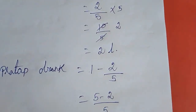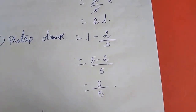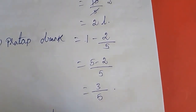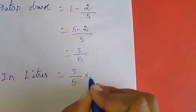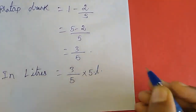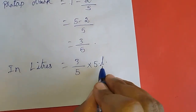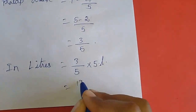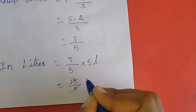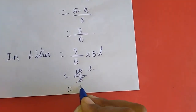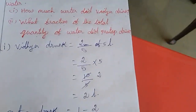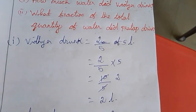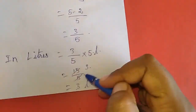How much in liters? That also we will find out. In liters: 3 by 5 into 5 — why 5 liters? Because only 5 liters were given. So 15 by 5; if you cancel, you get 3. So Pradhaap drank 3 liters. The question only asked for fraction, but for your knowledge, I noted it in liters also.